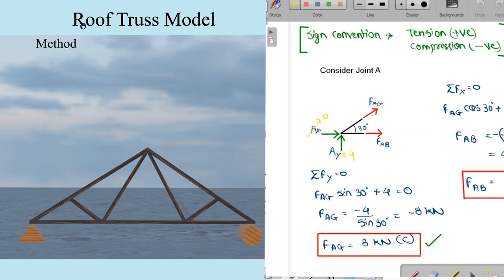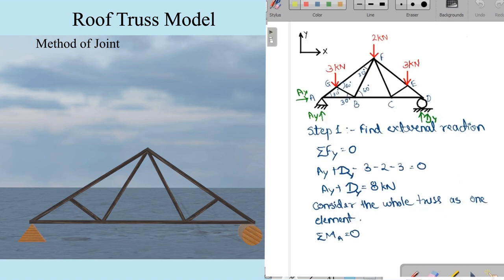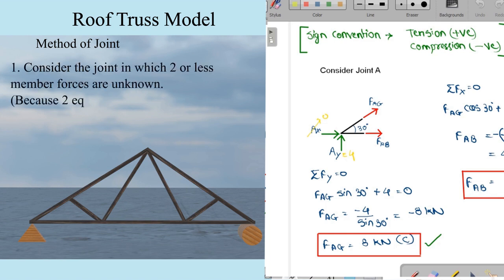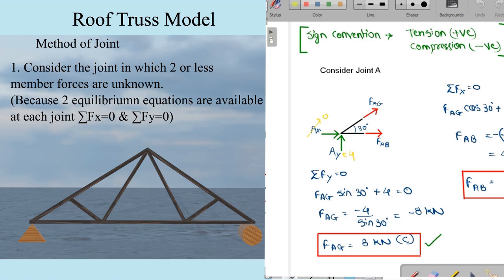Now we are going to find the member forces. In the method of joints, the most important rule is that we consider each joint one by one and analyze it to find the forces. The key concept is to select a joint where two or fewer unknown member forces are present, since we only have two equilibrium equations at each joint — summation of Fx and summation of Fy. The moment equation, summation of M = 0, is not valid here because truss members carry only axial forces and all forces pass through the joint, so no moment is generated.